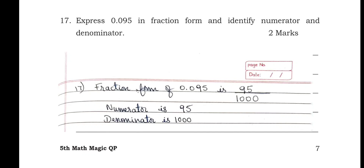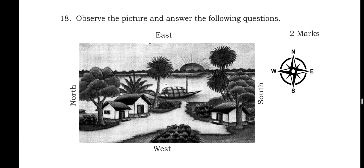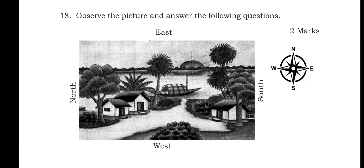Express 0.095 in fraction form and identify the numerator and denominator. The fraction form of 0.095 is 95/1000. The numerator is 95 and the denominator is 1000.